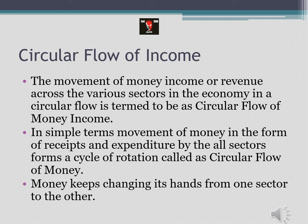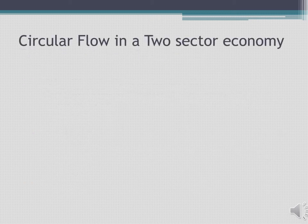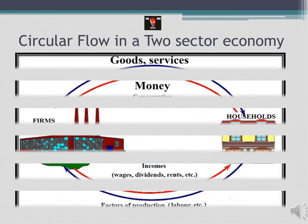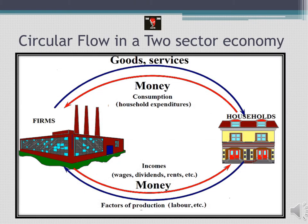There are different sectors such as firms, households, government, and financial institutions. But under this chapter we are only going to discuss circular flow in a two-sector economy. As you can see in this diagram, which depicts two sectors in the economy - that is firms and households - each sector is performing multiple transactions: receiving money on one hand and spending money on the other. Let us understand how these contribute to the working of the economy.